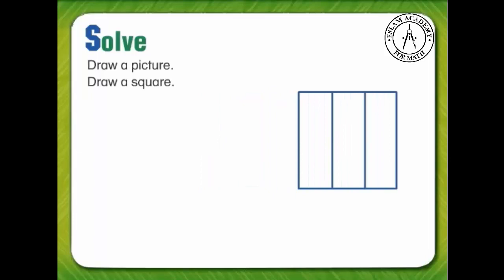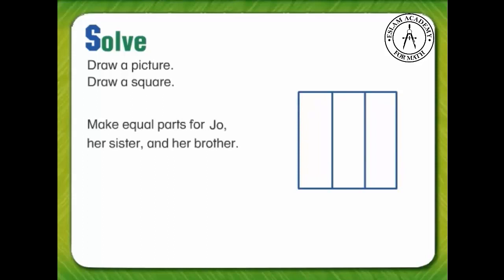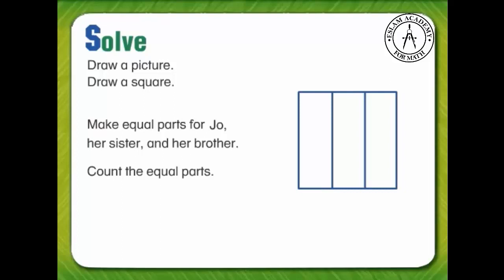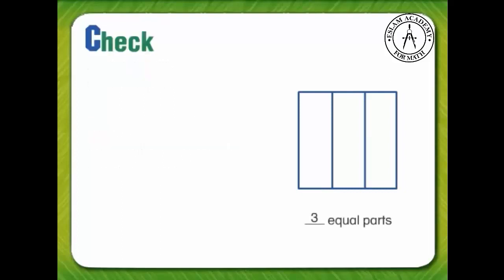Now we can divide the square into equal parts. We need to make equal parts for Joe, her sister, and her brother. We can use the picture to count the equal parts: one, two, three. So Joe needs to cut her sandwich into three equal parts.